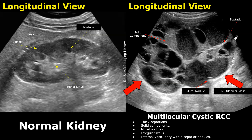The mass also has solid components, which are slightly hyperechoic compared to the internal echoes. Small mural nodules can also be seen. This mass will show strong internal vascularity within the walls or the nodules on color Doppler, which indicates that it is a malignant mass.